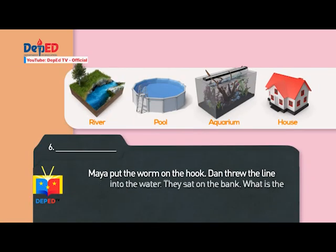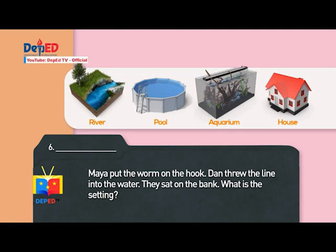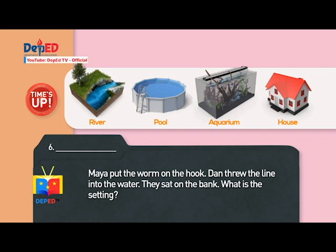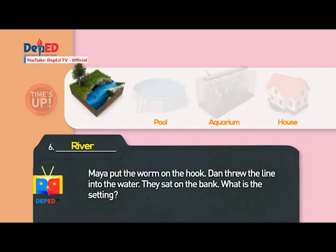Number six: Maya put the worm on the hook. Dan threw the line into the water. They sat on the bank. What is the setting? Clues: A river. A pool. An aquarium. A house. Answer: A river.